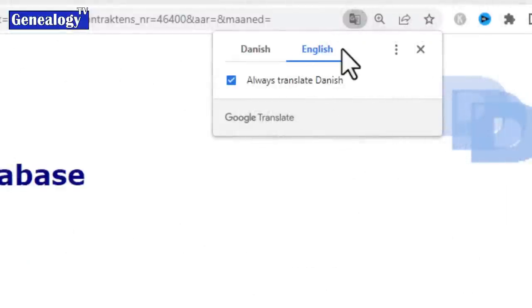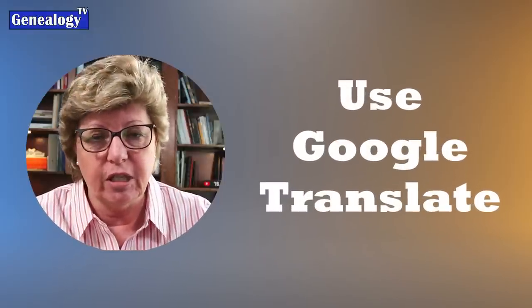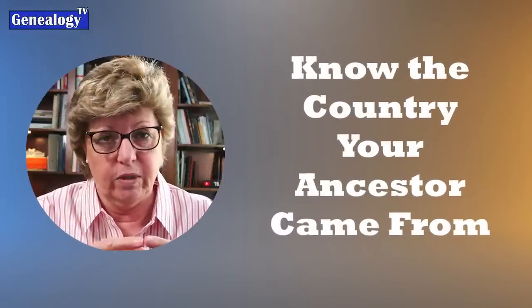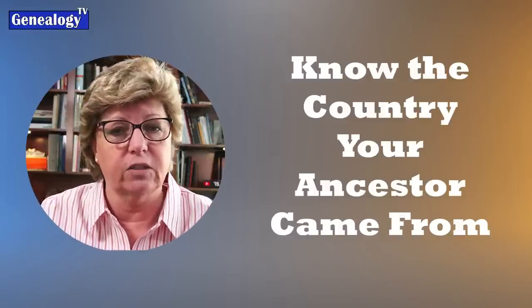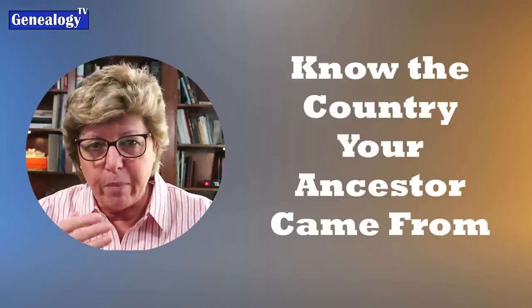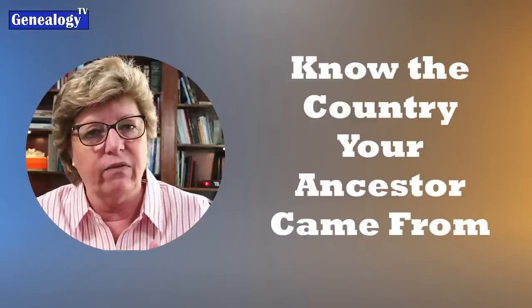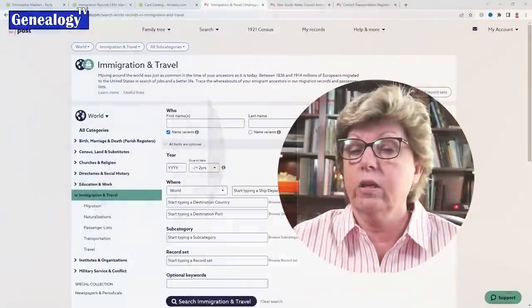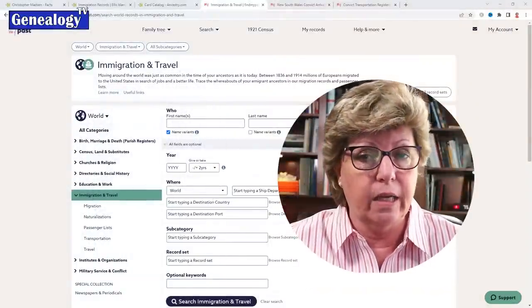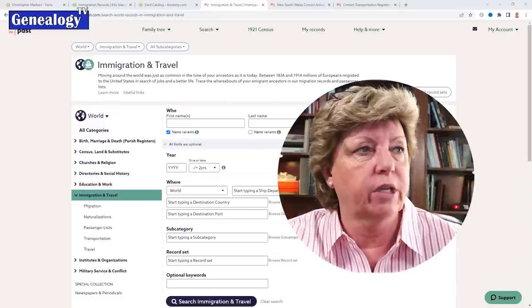For example, in Denmark there is a Danish National Archives online where you can do research. The trick is if it's in a different language, it can be challenging. A lot of these websites have an English version, but not always. You need to know at least the country, and ideally the town or village your ancestor came from. You may need to do more research here in the United States to flesh out any clues about where they're from.